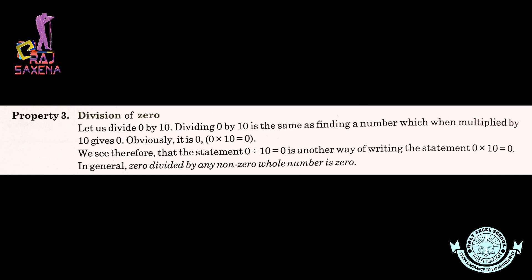Chaliye students, badhte hain next property ki taraf jo ki hai property number 3 — Division of 0. Let us divide 0 by 10. Dividing 0 by 10 is the same as finding a number which when multiplied by 10 gives us 0. Obviously, it is 0. Agar hum 0 ko 10 se divide karein toh obviously woh number 0 hi hoga, kyunki 10 × 0 = 0 hota hai. So, we can say that if 0 is divided by any whole number the quotient is always 0. In general, 0 divided by any non-zero whole number is 0.